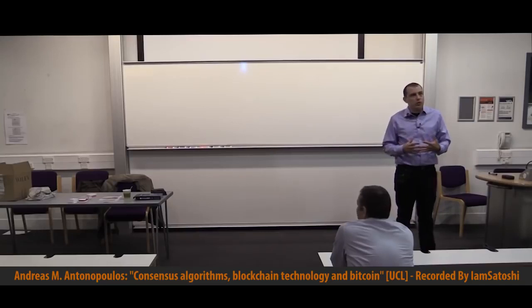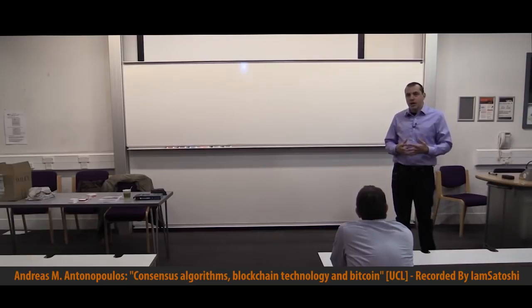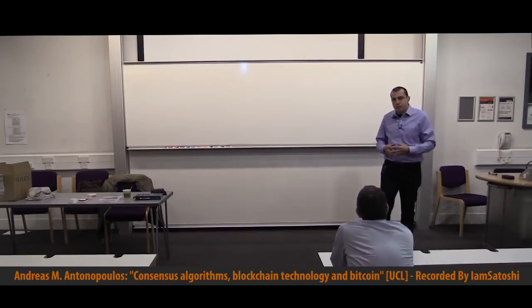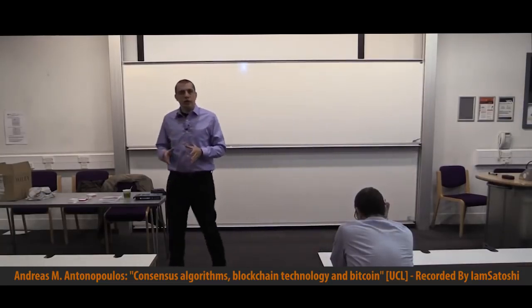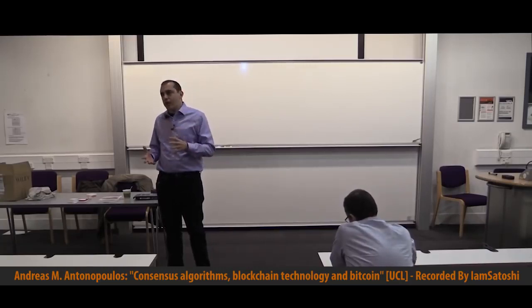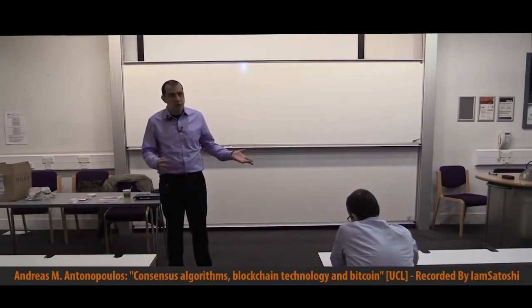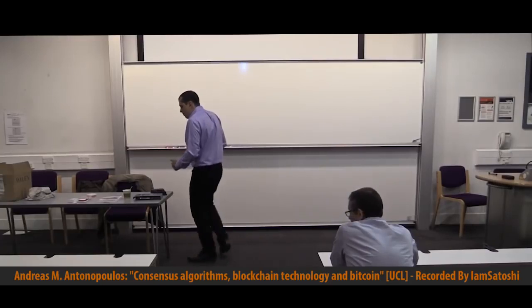The core idea in Bitcoin is to take five or six technologies that existed in the 70s, 80s, and 90s, and mash them together to create something completely new. All of the constituent components in Bitcoin existed about 15 years before Bitcoin actually showed up, but no one had combined them in this particular way. What's really novel about Bitcoin is its architecture. Think of it as a recipe — all of the ingredients were there, but no one had thought of combining them in this particular way.